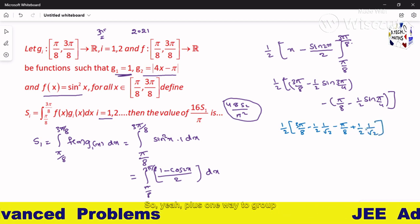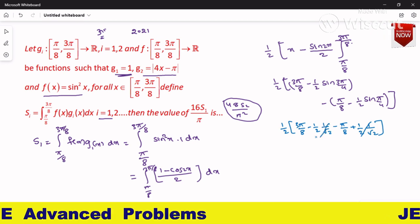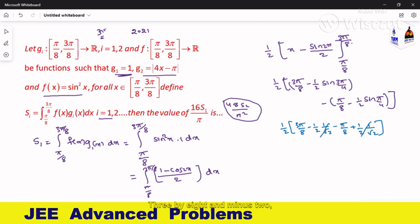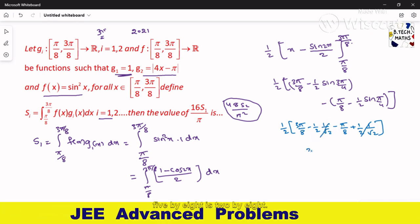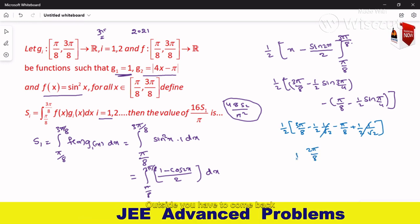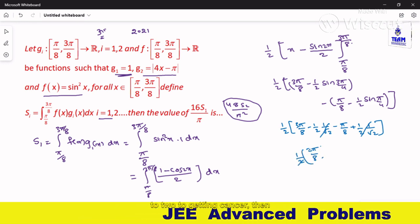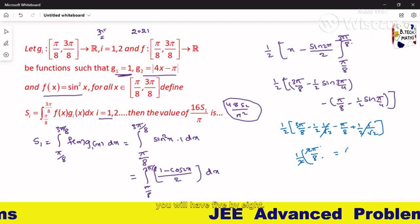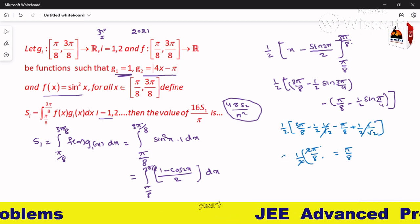So plus 1 by 2 root 2 minus 1 by 2 root 2 getting canceled. 3π/8 minus π/8 is 2π/8. Outside you have 1 by 2. The 2s cancel, then you will have π/8, which value is π/8.